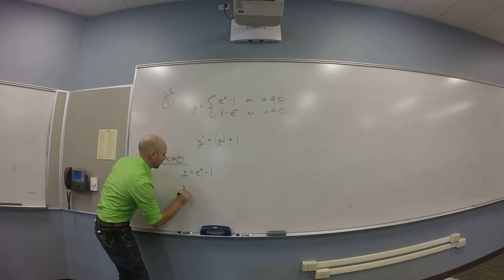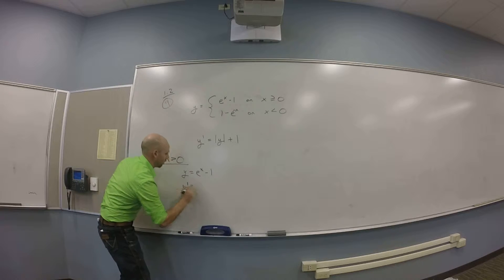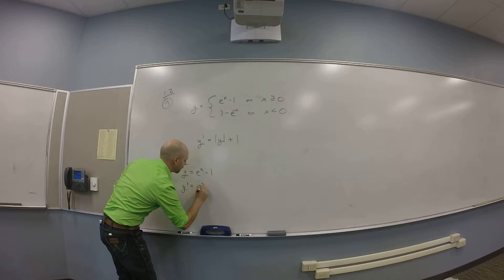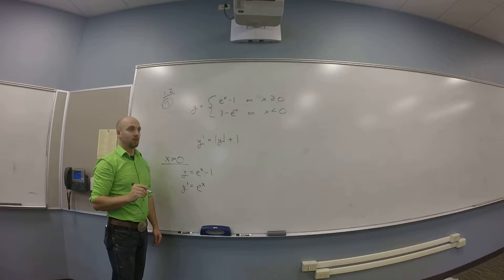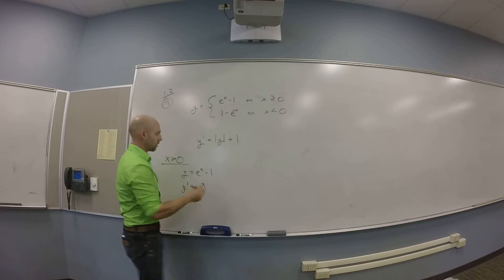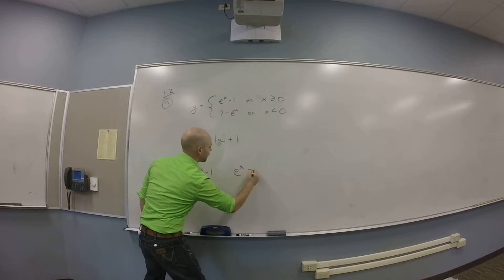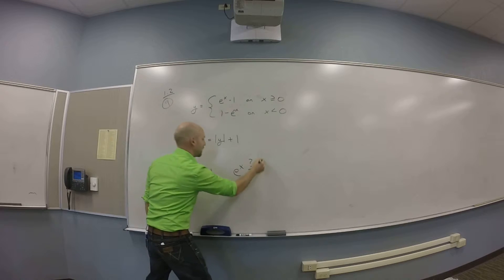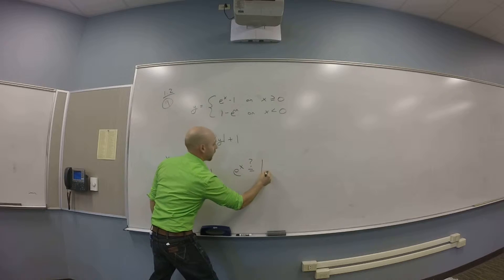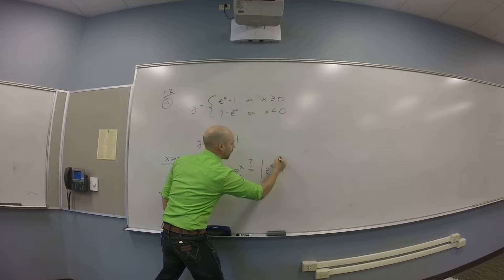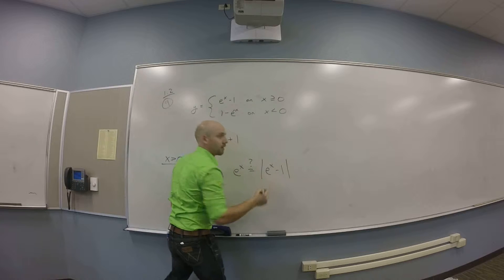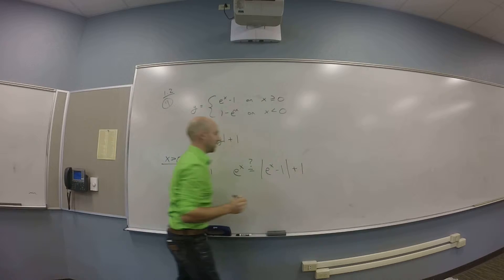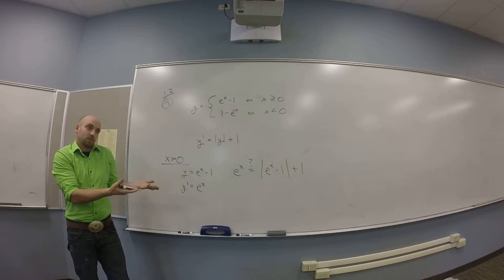And what's y prime? It should just be e to the x. So then I'm left wondering: is e to the x equal to the absolute value of e to the x minus 1, plus 1? Is this true?